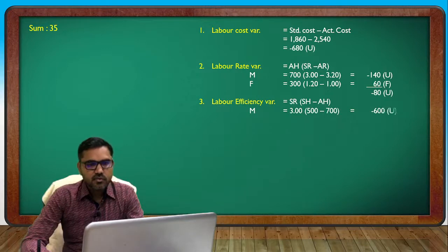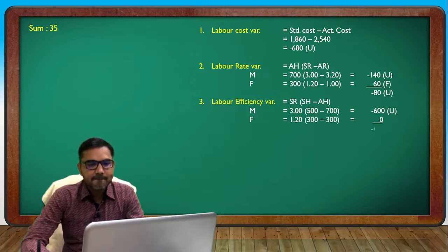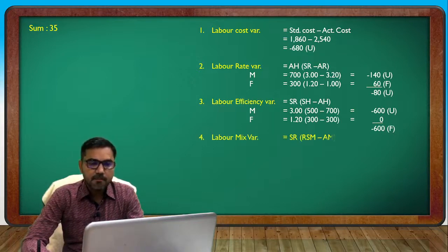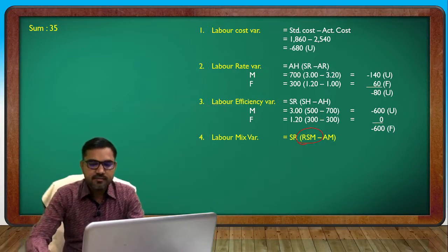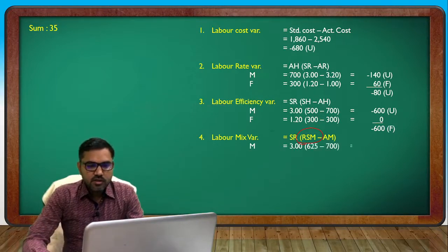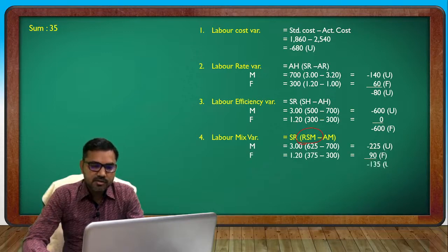So minus 600 unfavorable. Labor efficiency: 0 favorable. Mix variance: because in both, rate and hours are the same. The RSM formula: AR and SM — both totals are the same.